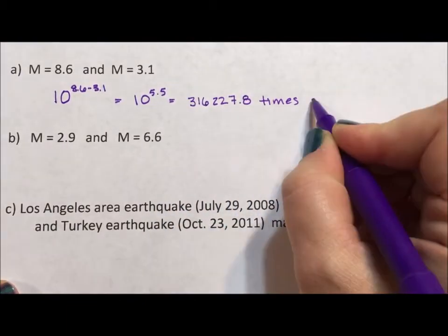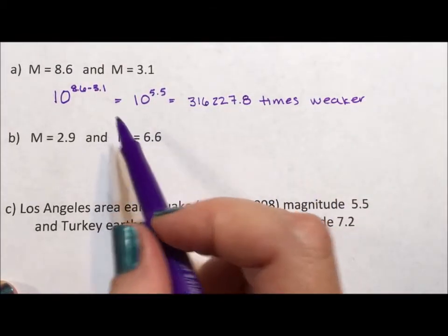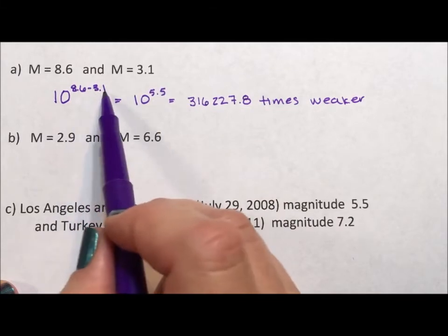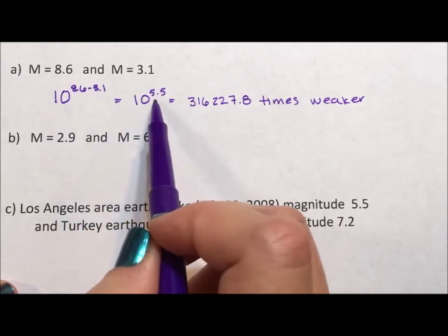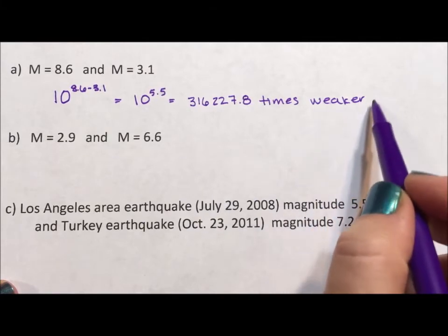Now, just so you understand how the labeling goes, if we were comparing it the other way around, we would do the same subtraction because we want the exponent to be positive. And then we would just change it right here with the word.